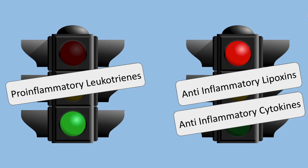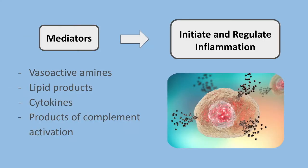In addition, as inflammation develops, the process itself triggers a variety of stop signals that will try to actively terminate the reaction. These active termination mechanisms include a switch in the type of metabolites produced — from pro-inflammatory leukotrienes to anti-inflammatory lipoxins and anti-inflammatory cytokines.